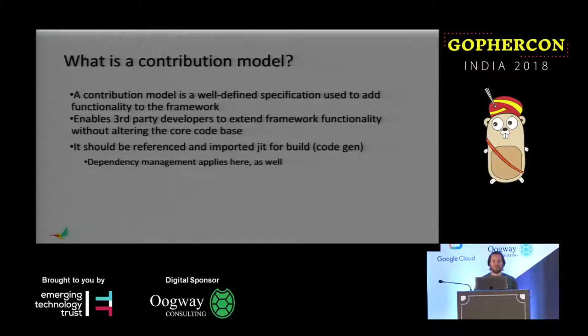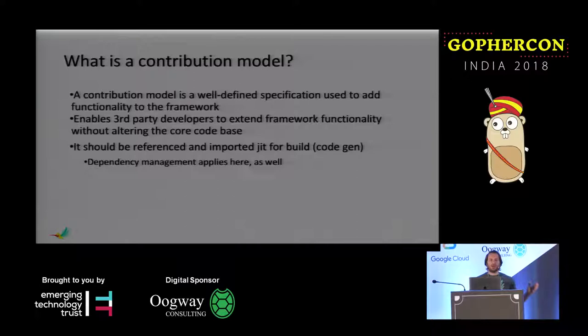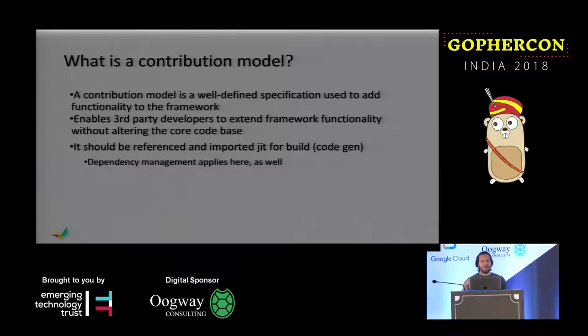What I really wanted to talk about was the contribution model itself. We designed this contribution model because we needed a well-defined specification for us as well as third parties to add and extend the framework. FloGo is a microservice-based framework — you've got several different flows or action types that implement logic. We quickly came to the realization that we would never be able to write all of the different contributions ourselves. So we built this contribution model. It also allows us to leverage dependency management tools to bring in the right dependencies at build time specifically for your target application. Rather than building a binary with a bunch of different dependencies, the CLI will actually prune and only include the dependencies you're actually using.